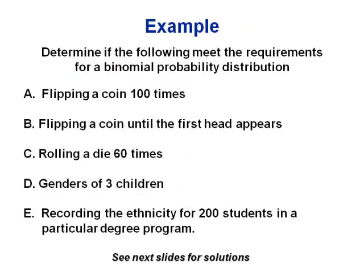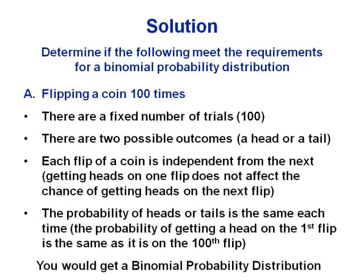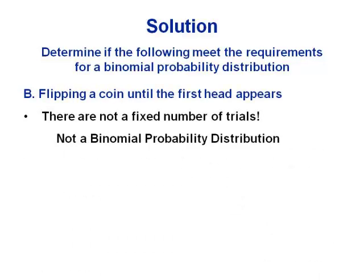Let's look at a few examples. If we flip a coin 100 times, we have a fixed number of trials. There are two possible outcomes — heads or tails. Each flip is independent; getting heads on the first flip doesn't affect the next. And the probabilities are the same: 50% chance of heads every time. So yes, this would create a binomial probability distribution. However, if we flip a coin until we get heads for the first time, that already fails the first requirement — there is not a fixed number of trials. So that would not be binomial.